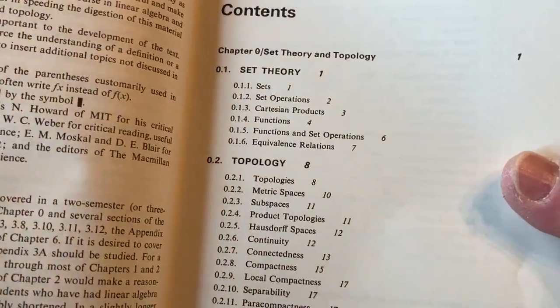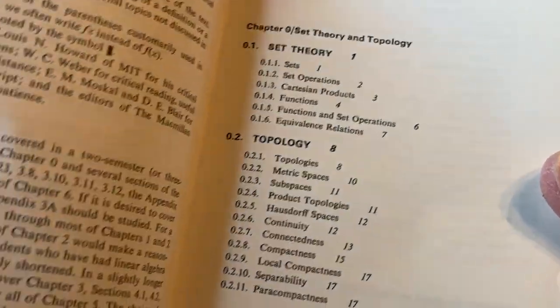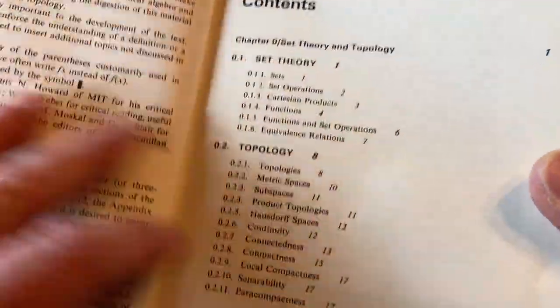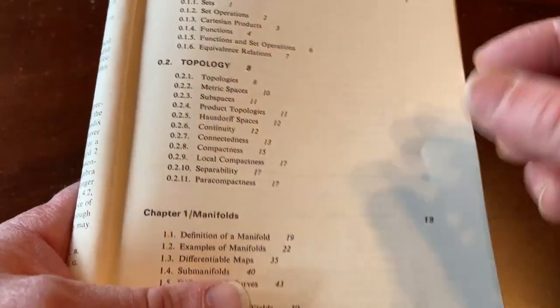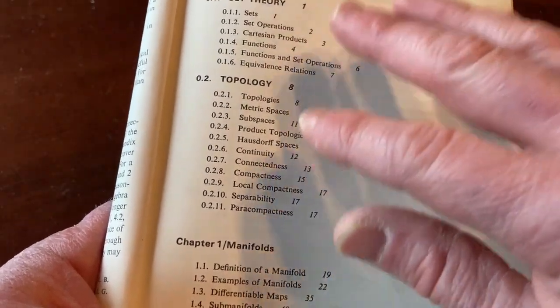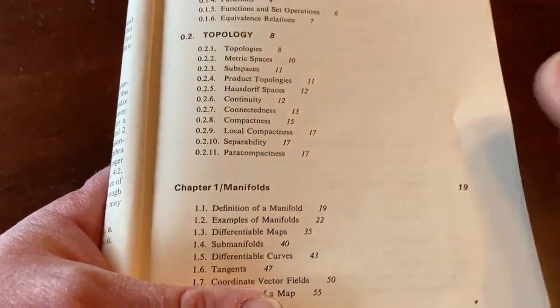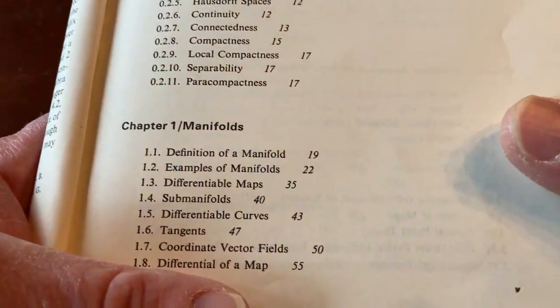Chapter 0 is just things that you kind of should know before reading this book, so it throws them in there. They talk about how you don't necessarily need to go through all of that. Technically, as long as you have some familiarity with this, you could really jump into Chapter 1 on manifolds.